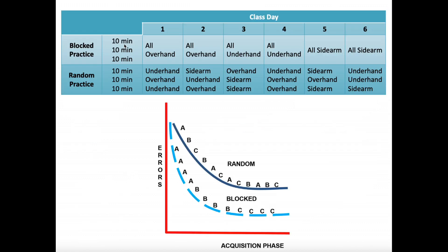Let's look at another six-day schedule to further illustrate blocked practice. We're doing three sets of something, each set is 10 minutes. In blocked practice on days one and two, all three sets are overhand. Days three and four are all underhand. Days five and six are all sidearm.